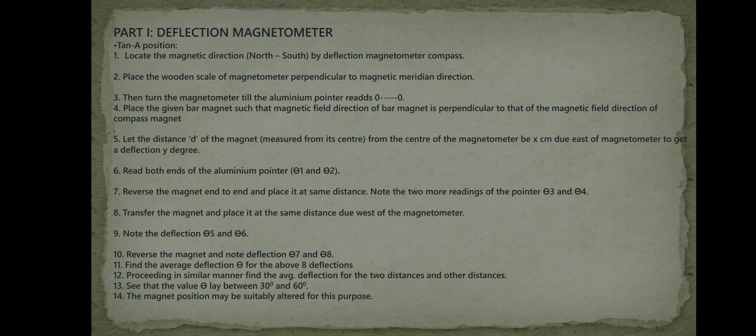Note the deflection theta 5 and theta 6. Reverse the magnet and note the deflection theta 7 and theta 8. Find the average deflection theta for the above 8 deflections. Proceeding in similar manner, find the average deflection for two more distances. See that the value of theta lies between 30 degrees and 60 degrees. The magnet position may be suitably altered for this purpose.